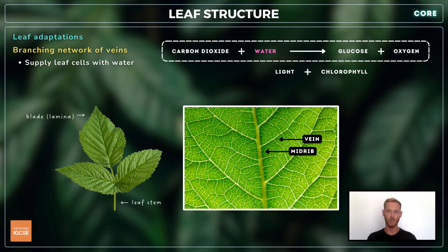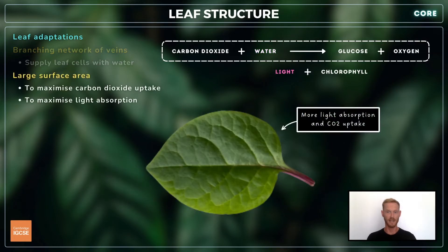A network of veins that branches outwards from the midrib brings water to the leaf cells and carries away any sugars produced. A broad, flat shape gives leaves a large surface area, maximising the uptake of carbon dioxide and the absorption of light.